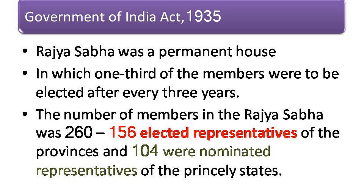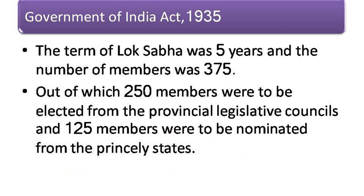The term of Lok Sabha was five years and the number of members was 375, out of which 250 members were to be elected from the provincial legislative councils and 125 members were to be nominated from the princely states.